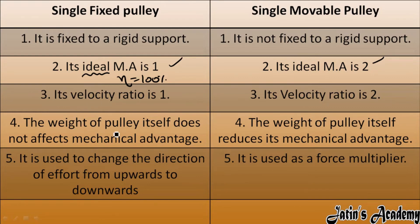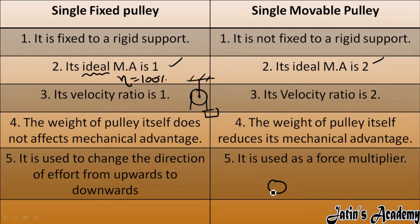The weight of the pulley itself does not affect the mechanical advantage in a single fixed pulley, as it is fixed to a rigid support. But in the case of a movable pulley, a block is attached and we are applying effort. If the pulley is too heavy, we also bear the load of the pulley itself, so the mechanical advantage changes according to the weight of the pulley. The weight of the pulley is significant here, but insignificant in the case of a single fixed pulley.